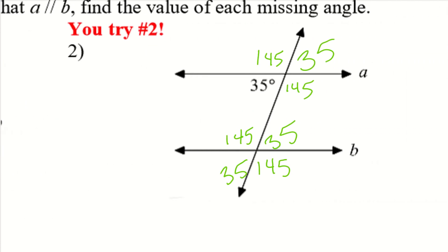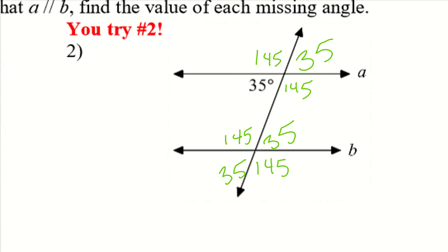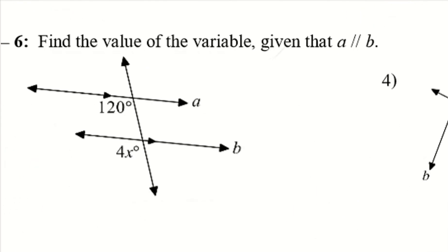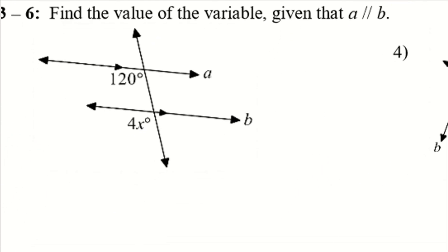Here's what we should have gotten for example two using corresponding angles, vertical angles, and linear pairs. For example three, we just want to find the variable. These are corresponding angles — they're in the same position on each side of my lines — so they are congruent. So 120 equals 4x, divide by 4, 30 equals x.